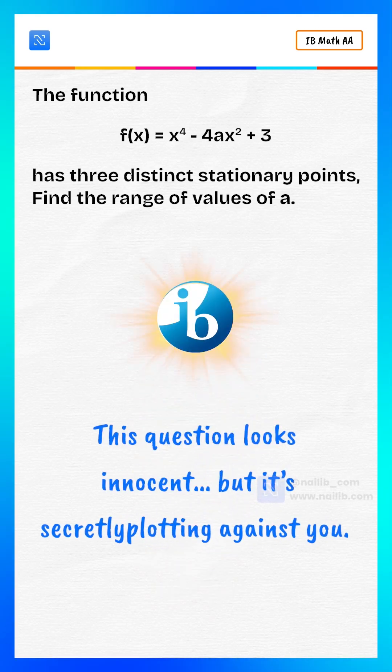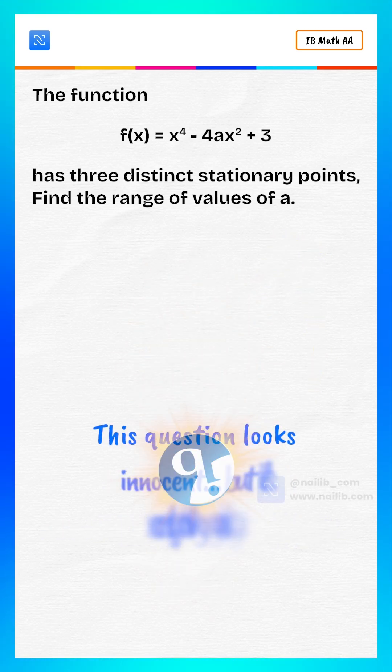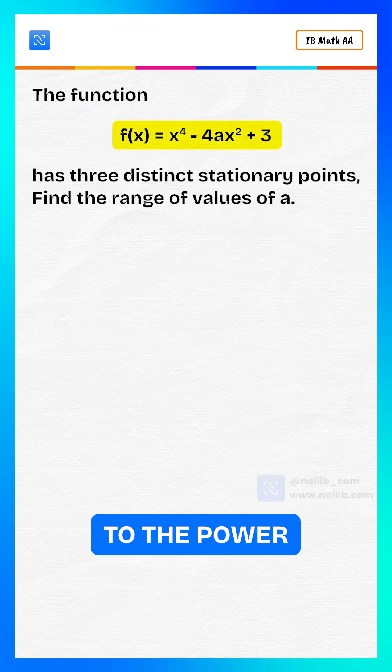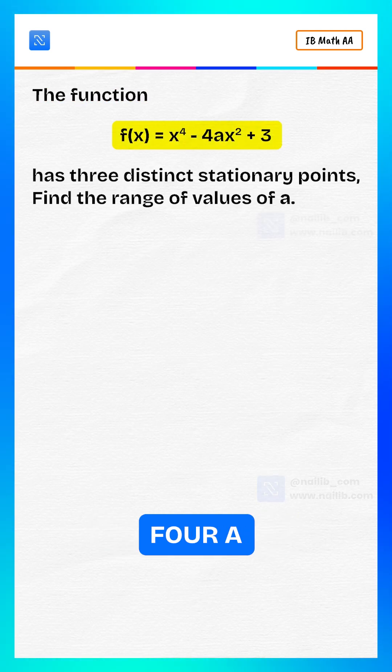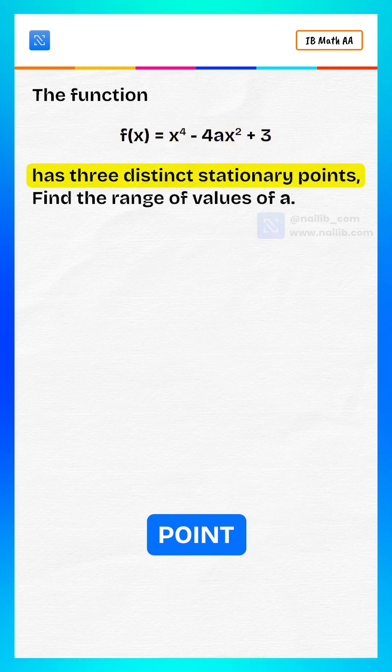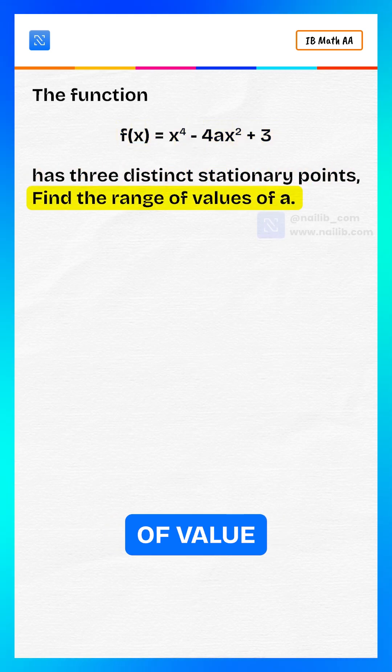This question looks innocent, but it's secretly plotting against you. We are given the function f of x equals x to the power 4 minus 4ax squared plus 3, has three distinct stationary points. Find the range of values of a.